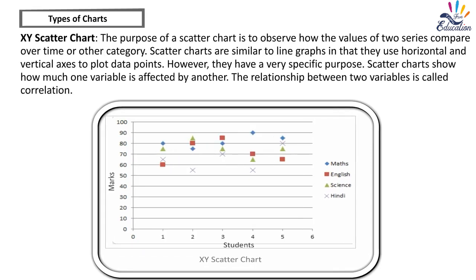XY Scatter chart: The purpose of a scatter chart is to observe how the values of two series compare over time or other category. Scatter charts are similar to line graphs in that they use horizontal and vertical axes to plot data points. However, they have a specific purpose: scatter charts show how much one variable is affected by another. The relationship between two variables is called correlation.